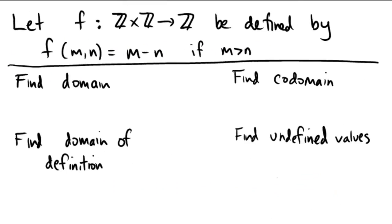Let f be a function defined from Z×Z to Z by f(m,n) = m-n if m is larger than n. This is actually a partial function because it's not defined on the entire domain.